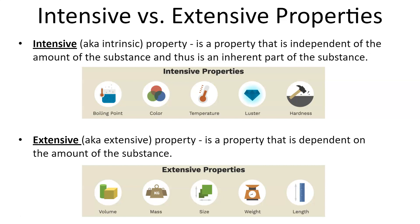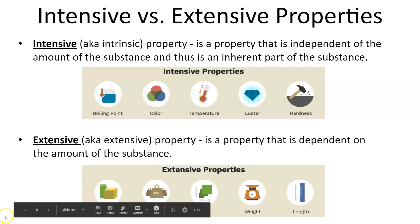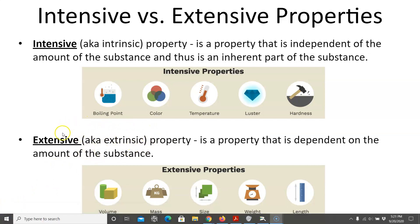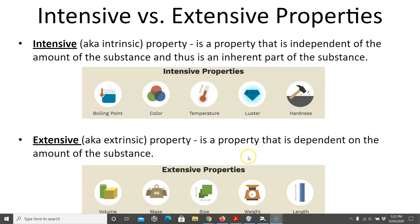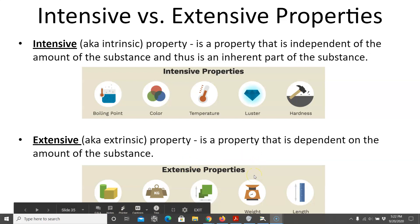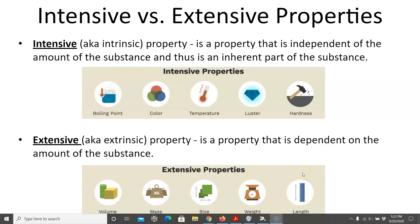On the other hand, an extensive property — also known as an extrinsic property — is dependent on the amount of a substance. Volume depends on how much you have, as does weight or mass, and length. So extensive properties are not inherent; they can change depending on how much of the substance you have.